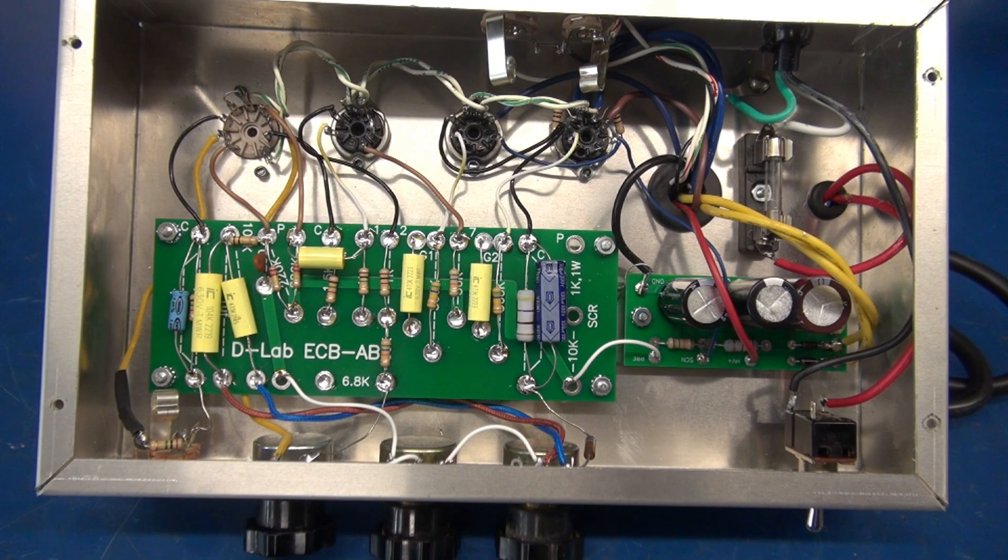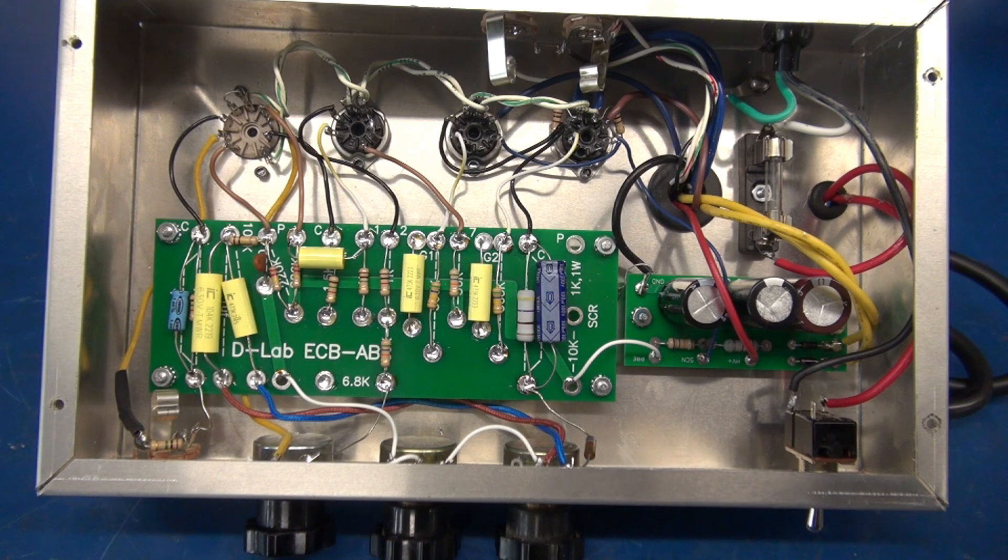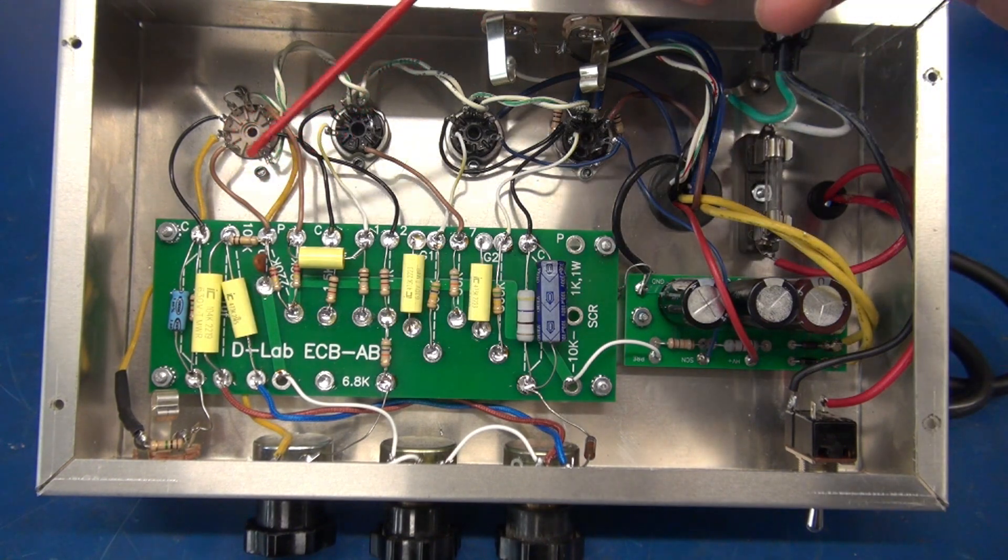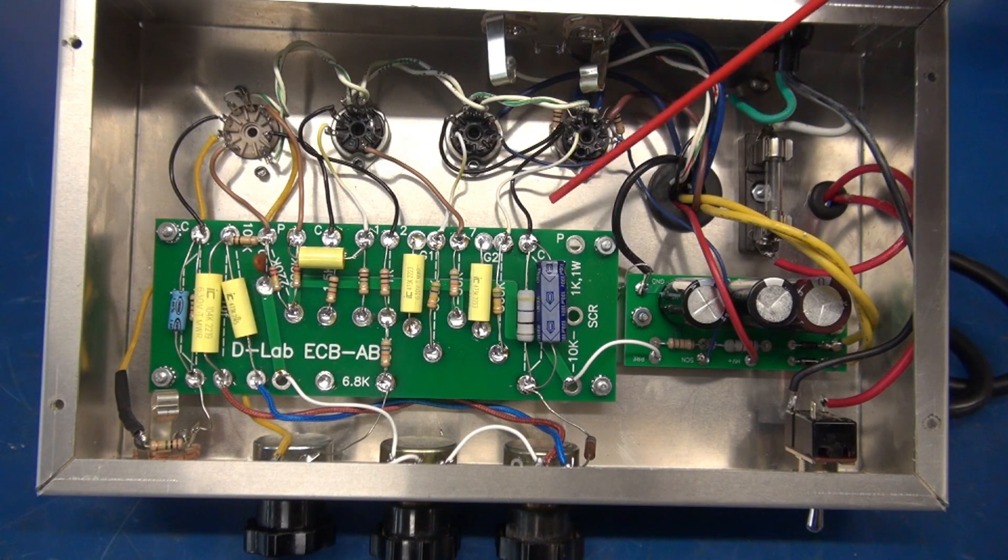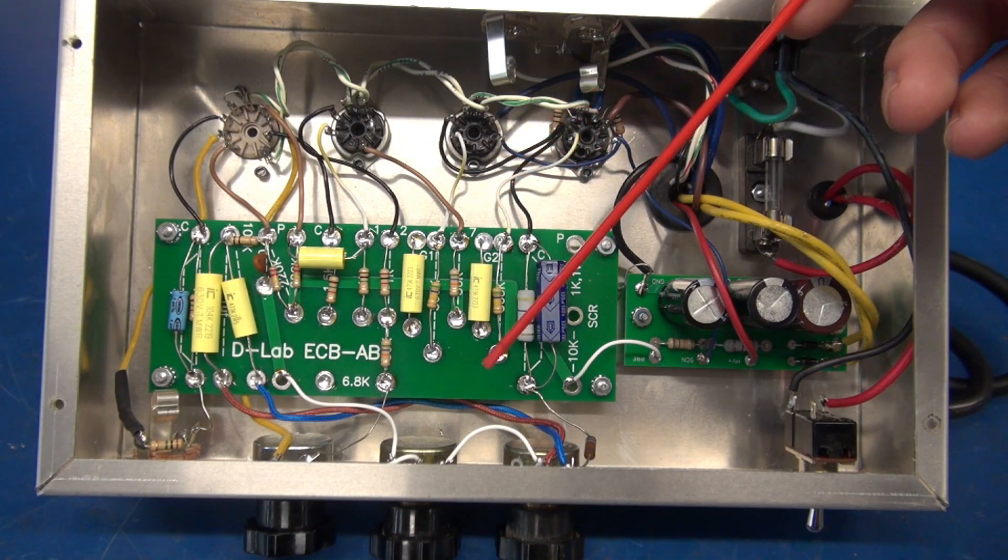All right, so my arrangement of this ECB-AB amp was for one reason, and that is to keep noise low. So if you take a look, you have very short leads taking off out of the main board, going to the tube sockets and controls.